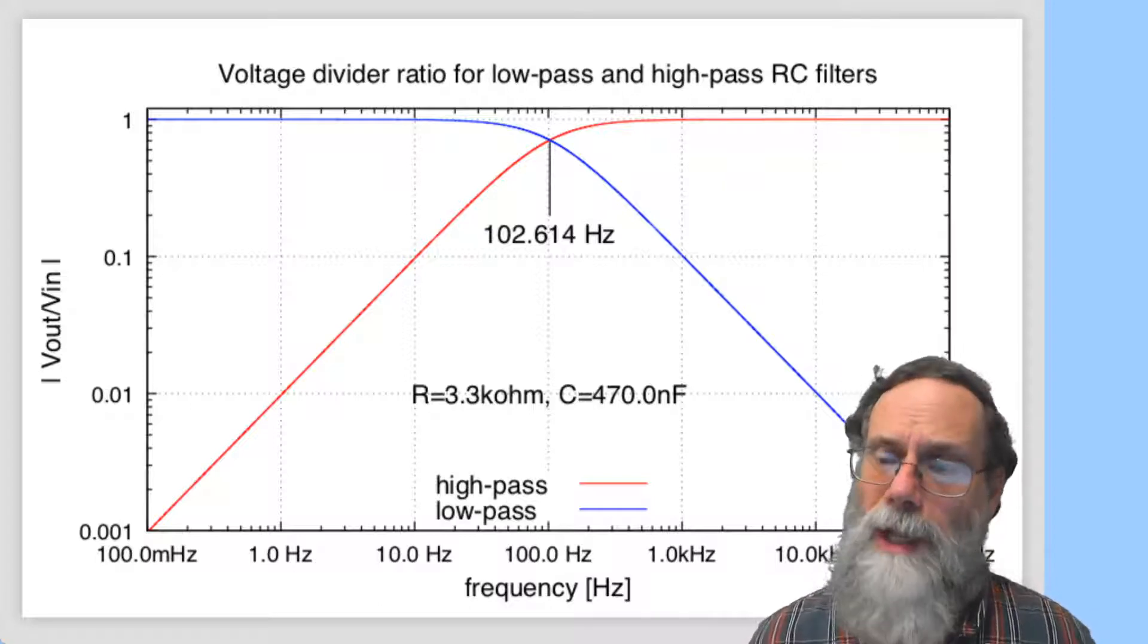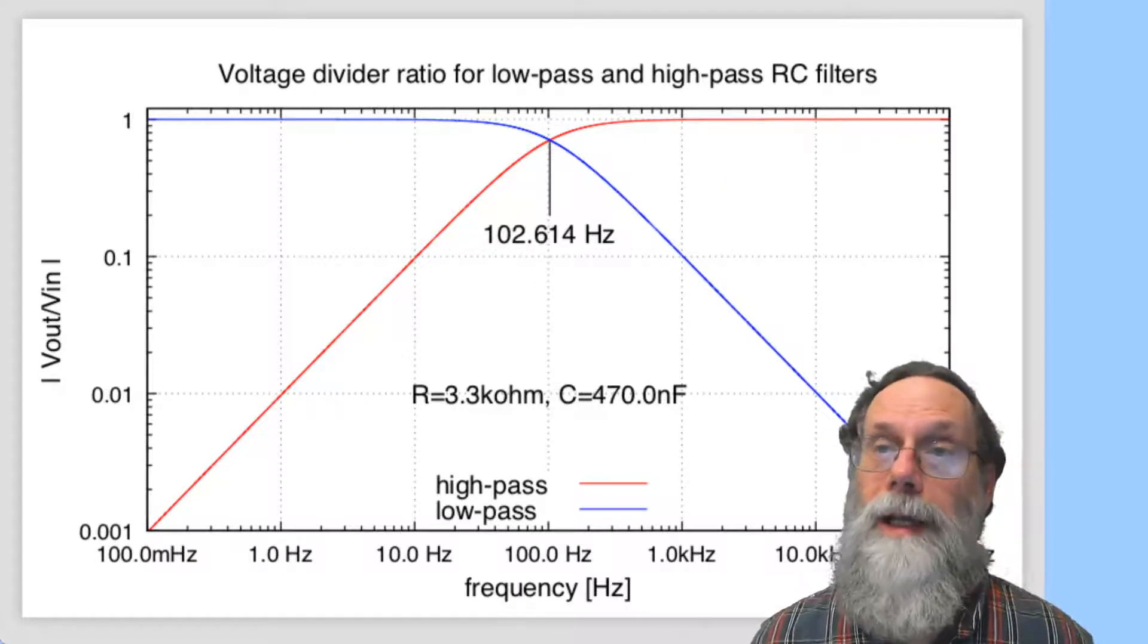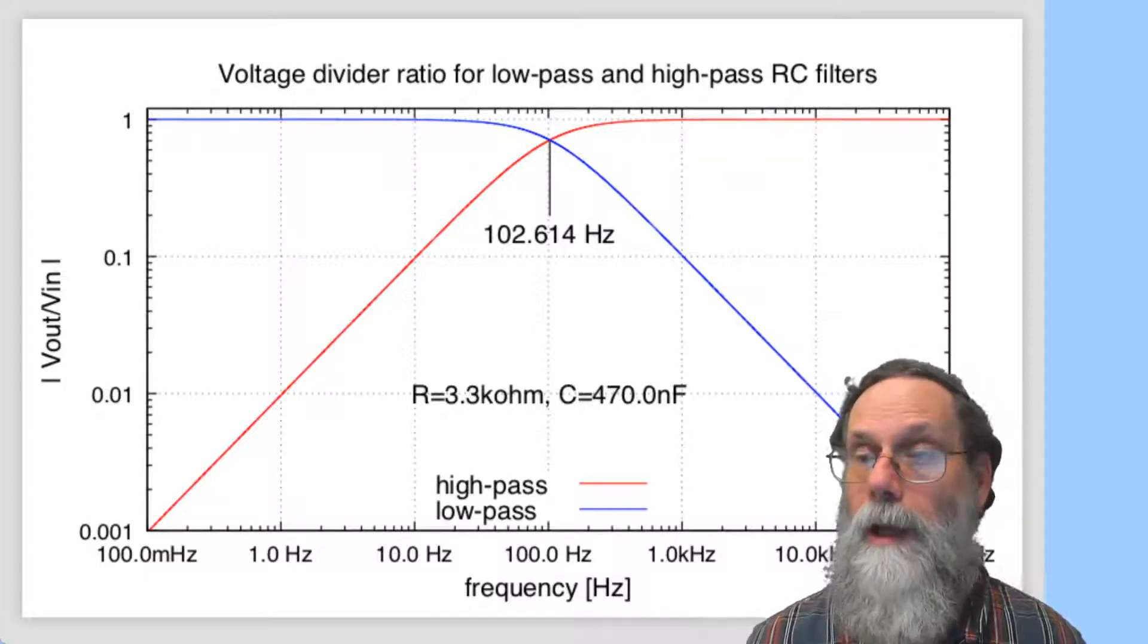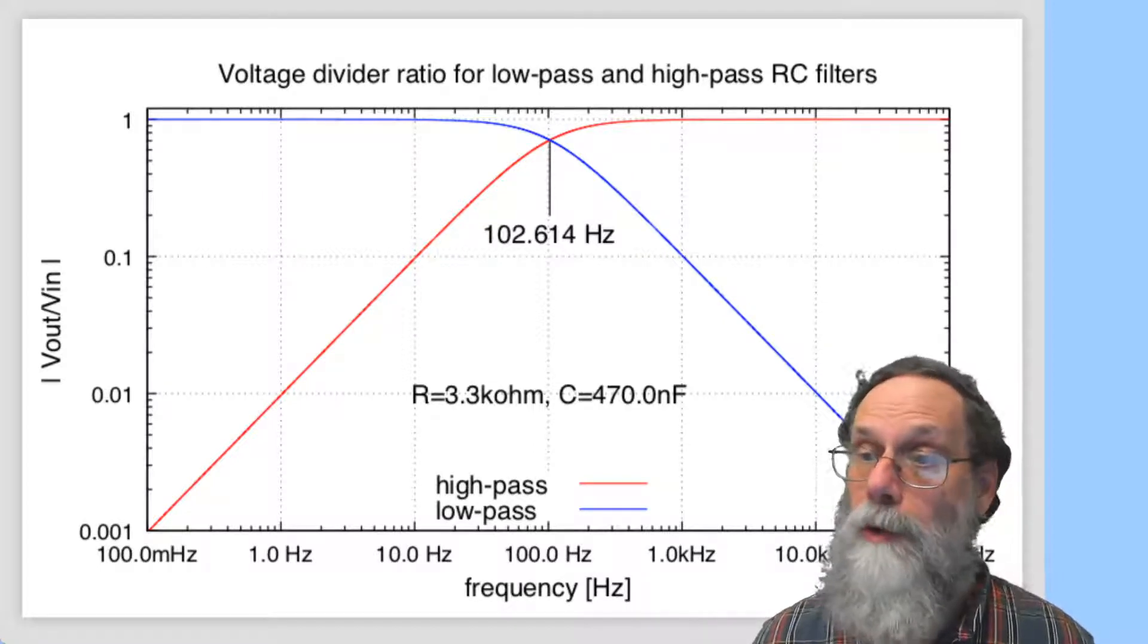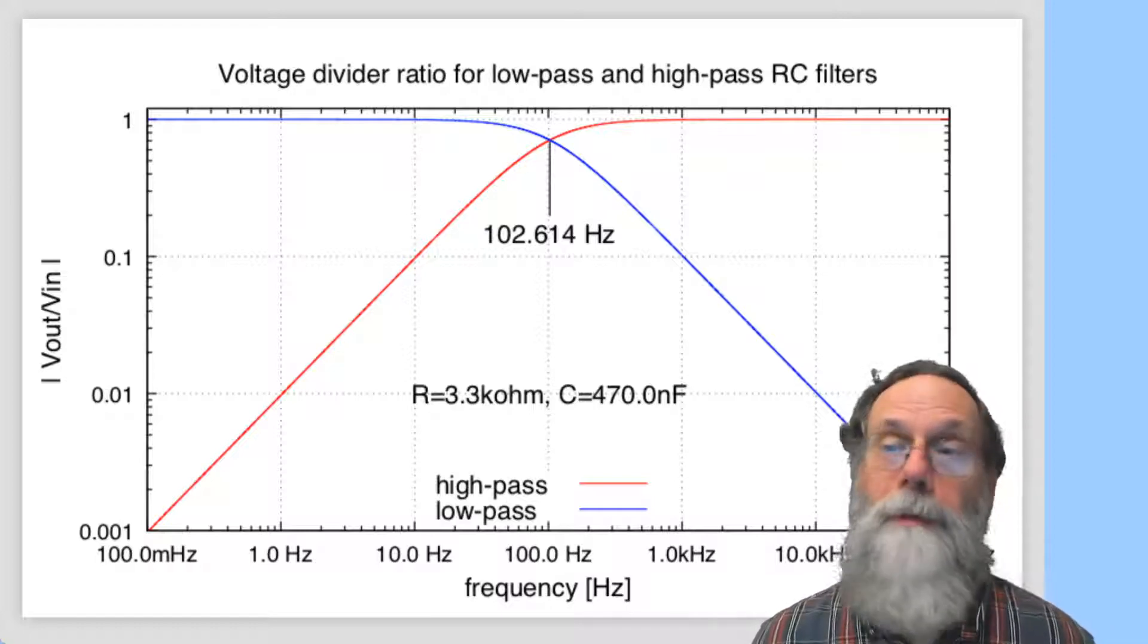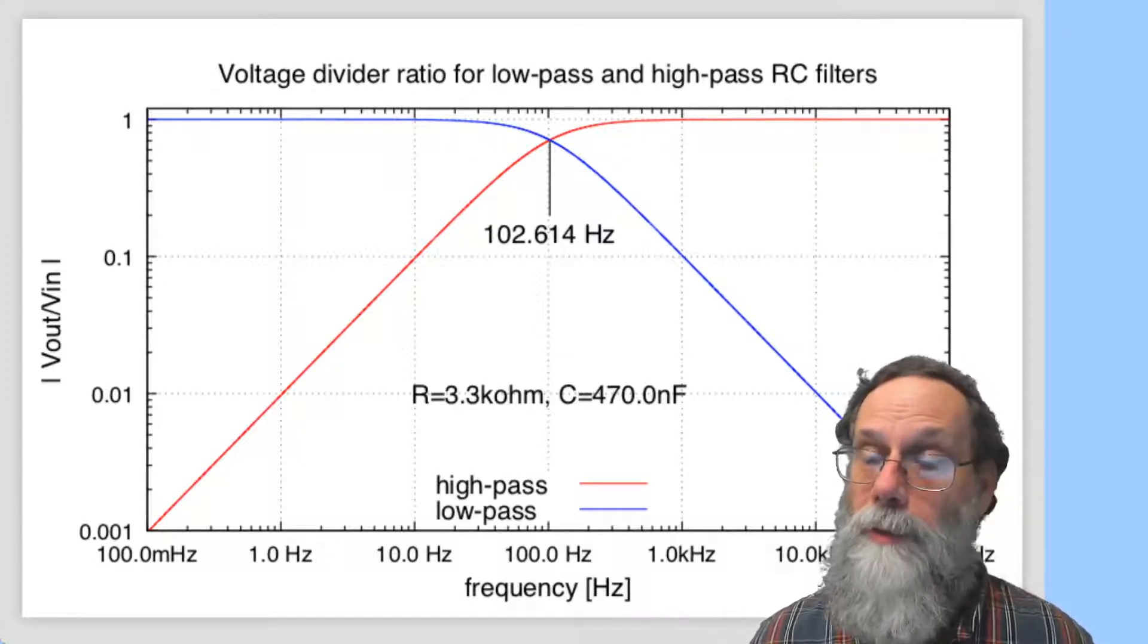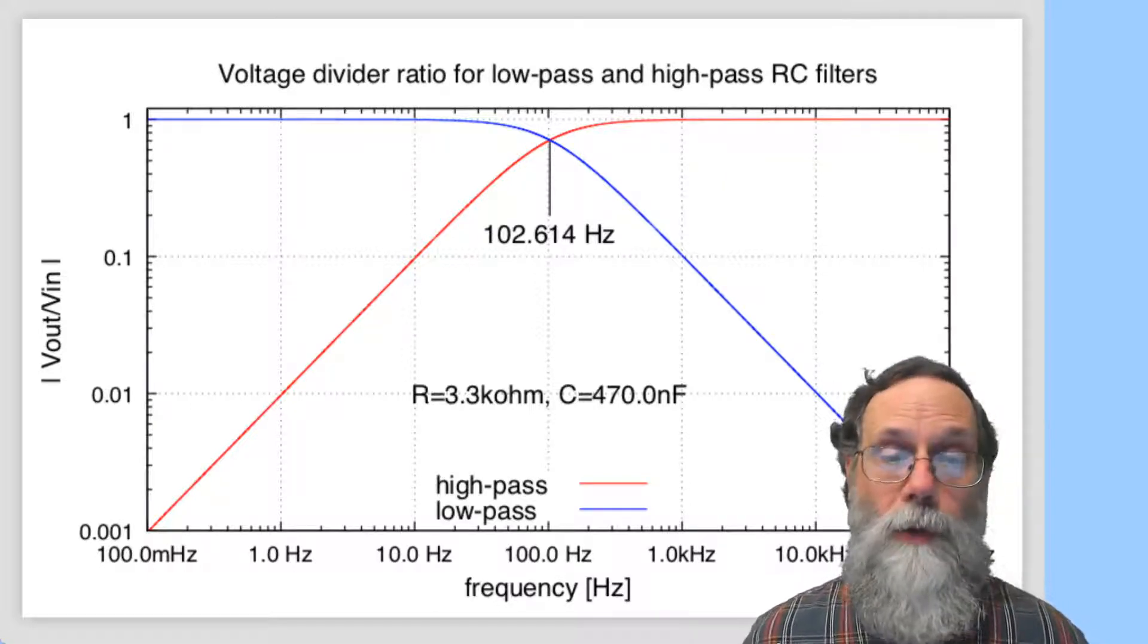This is an example that I showed in a previous video of two filters, a low-pass filter in blue and a high-pass filter in red. What I'm going to do in this video is show you how to produce this plot. You will be producing many plots of your own that have similar characteristics to this one.